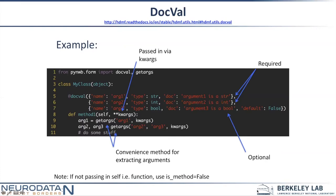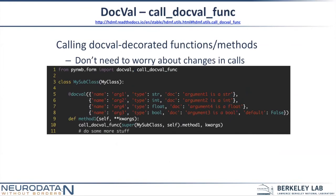Sometimes you may find yourself extending classes and need to call the super method, where a lot of the arguments are the same in the superclass method as in the subclass method. Docval — or call_docval_func — provides a wrapper function for taking care of a lot of that boilerplate: extracting arguments and then passing them into the function. Call_docval_func works by passing in some function and the kwargs dictionary containing all the arguments. The nice thing is if you add an argument to a method, it takes care of extracting and passing it during the function call.